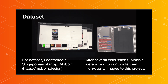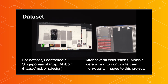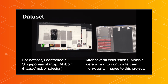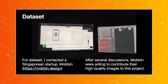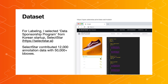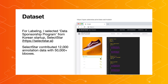For data, I connected with a Singapore-based startup called Mobbin, which has over 50,000 high-quality mobile screenshots for product designers. I contacted them, presented my project, and got over 10,000 high-quality UI screenshot data from them. Moreover, I received free data labeling support from a Korean startup. We worked super hard together and annotated over 50,000 UI bounding boxes. I am sincerely appreciative of the contributions of those two companies to this project.